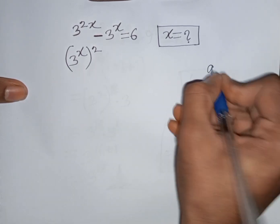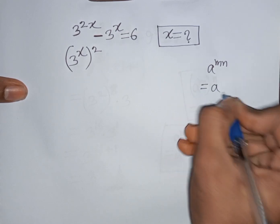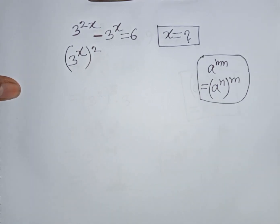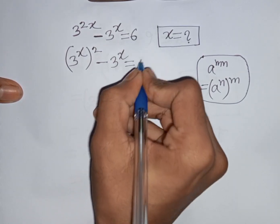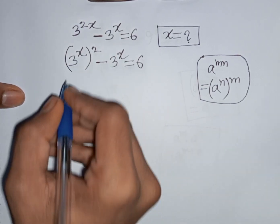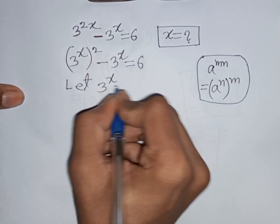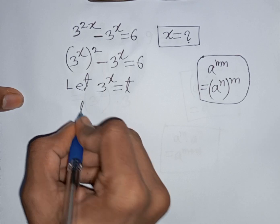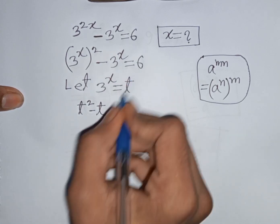According to the exponential rule that a power of mn is equal to a power n bracket power m. So, minus 3 power x is equal to 6. We see 3 power x and 3 power x — both terms are the same. So, let 3 power x be substituted by t. Our equation will be t square minus t is equal to 6.